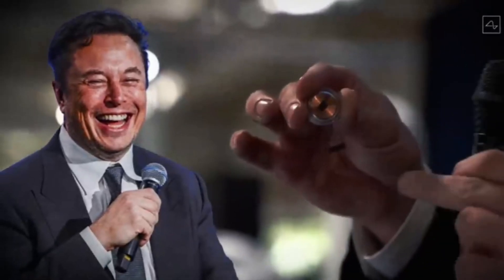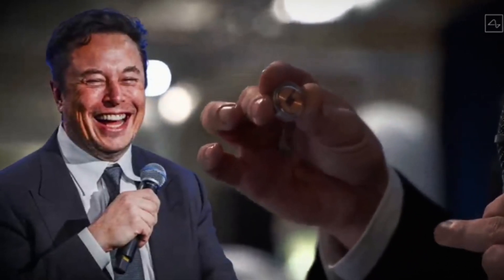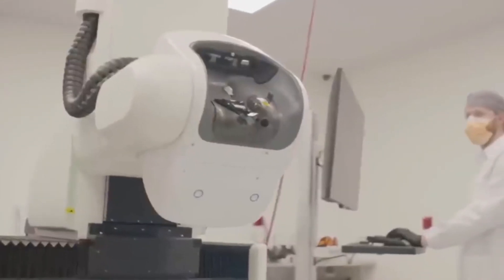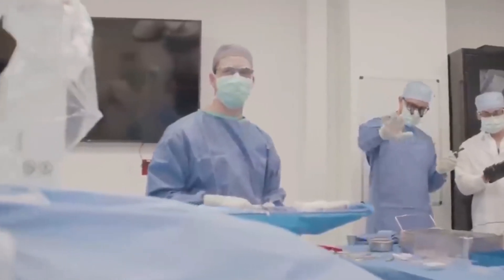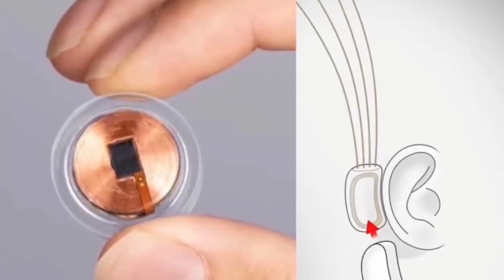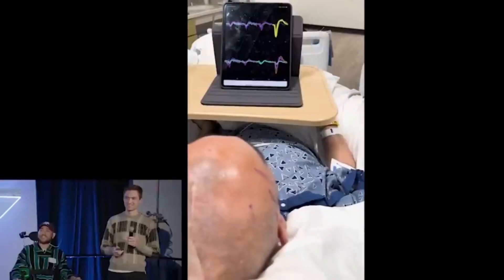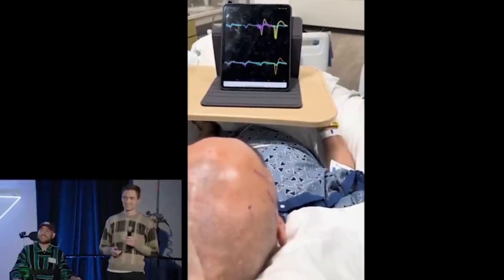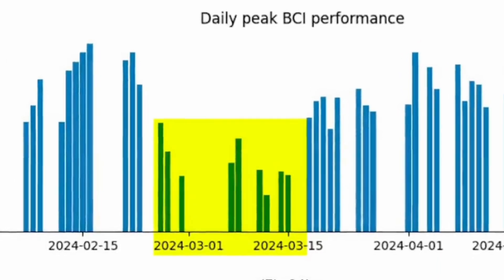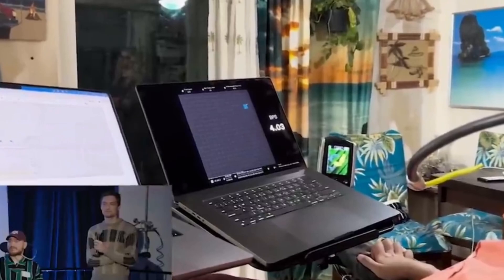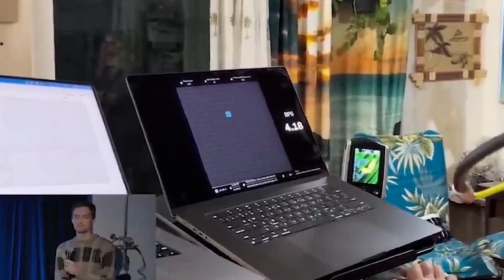Musk explained that Neuralink is taking steps to reduce the risk of the implant retracting from the brain as occurred with the first patient. These measures include sculpting the skull to help the device fit better, inserting wires deeper into the brain, and removing air pockets left inside the skull after surgery. The company is also developing an improved device that could double the bandwidth offered by the current model.